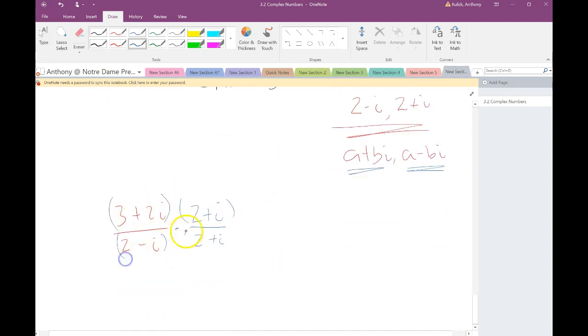So my conjugate for something like 2i minus 1 is going to be 2 plus i. So the conjugate of something like a plus bi is going to be a minus bi. So going all the way back here, we had 3 plus 2i over 2 minus i. So we will multiply by the conjugate. In this case it is 2 plus i.